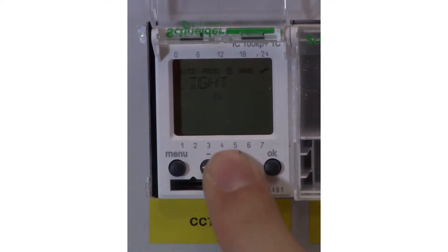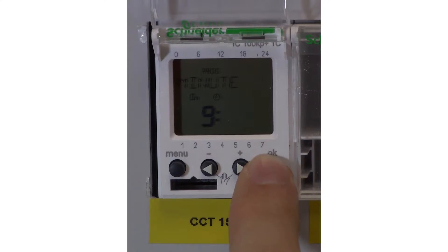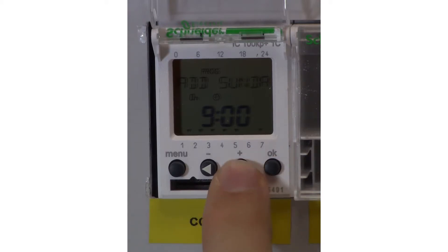To set the on time, press menu, program, new, on. Here's where you pick the specific time you want the program to start. Once you've selected the time, you can then add the specific days of the week you want the program to include. Once you scroll through the menu, then you press save.